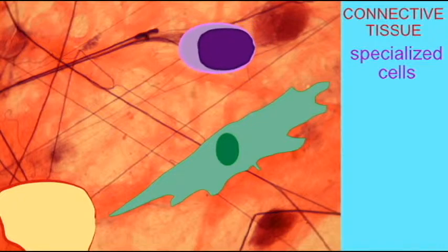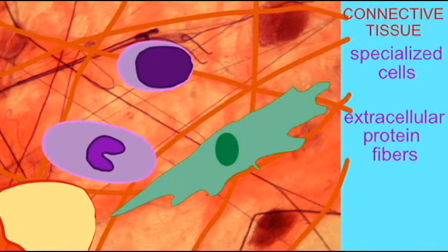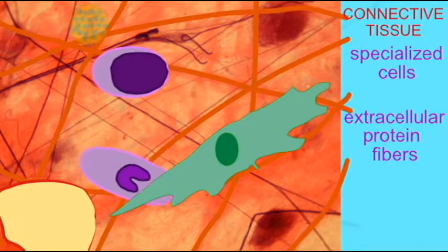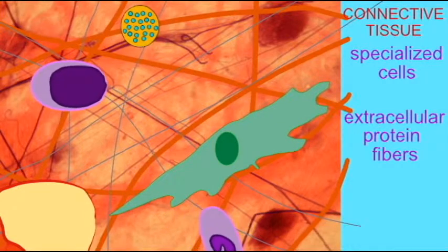Specialized cells, extracellular protein fibers - these are, in addition to the proteins which are found inside cells, proteins which are produced and part of the surroundings of the cells.